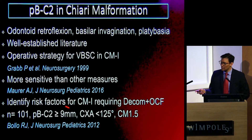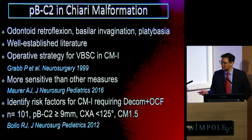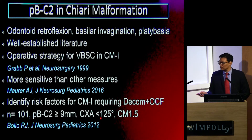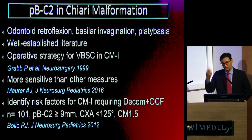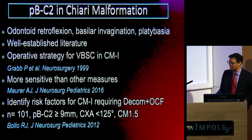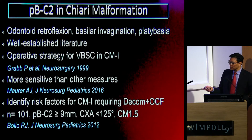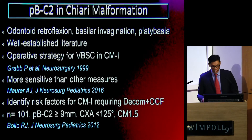Taking that further, it's also been used to risk-stratify patients who would benefit from not just decompression but also occipital cervical fusion surgery. The combination of a Grabb-Oaks measurement cutoff of more than 9mm, a clivo-axial angle of less than 125 degrees, and a Chiari-1.5 entity — meaning the obex is at or beyond the level of the foramen magnum — once you risk-stratify patients in that category, they would be seen to benefit from occipital cervical fusion.